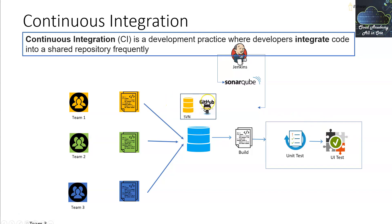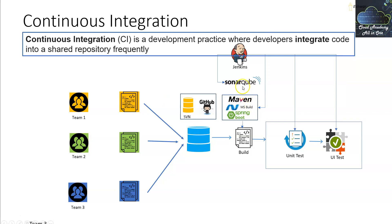For source code control, you could use SVN or GitHub — there are plenty of tools available. For build systems, you may already be using Maven, MSBuild, or Spring Boot. For code quality auto-checks, SonarQube can be used, or ReSharper if you're using C#, or StyleCop — there are plenty of tools for code quality analysis. These run automatically as soon as code is checked in or integrated to the central repo, and they produce a report. If there are no issues, it proceeds to unit testing and gives results based on coverage. This is how the Continuous Integration process works.